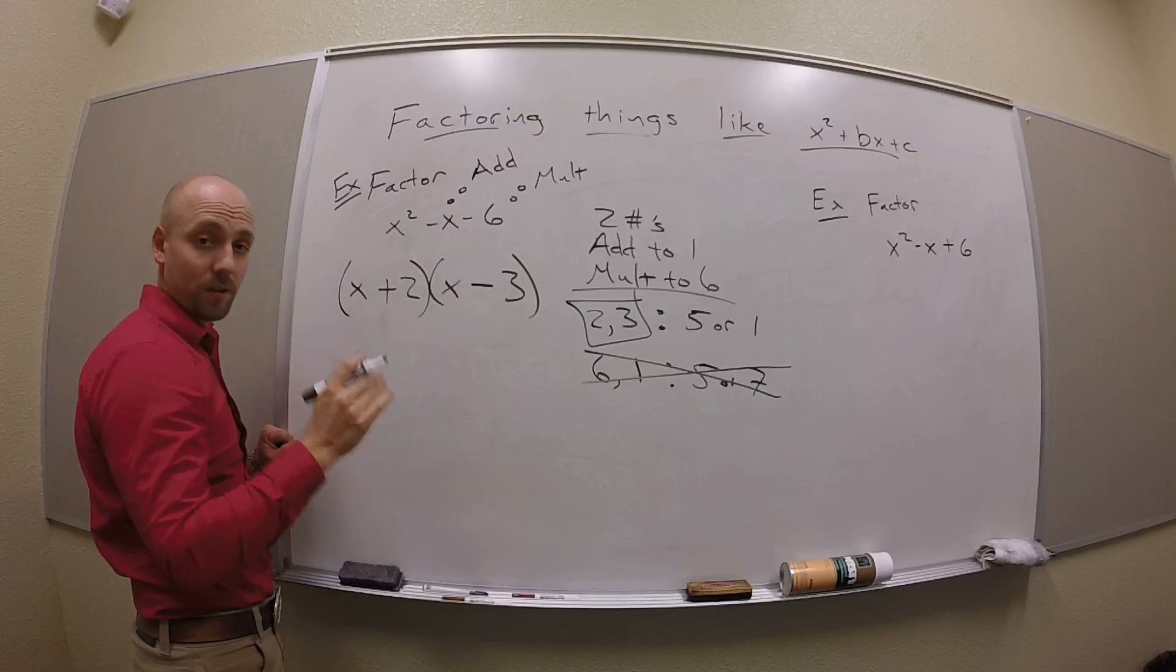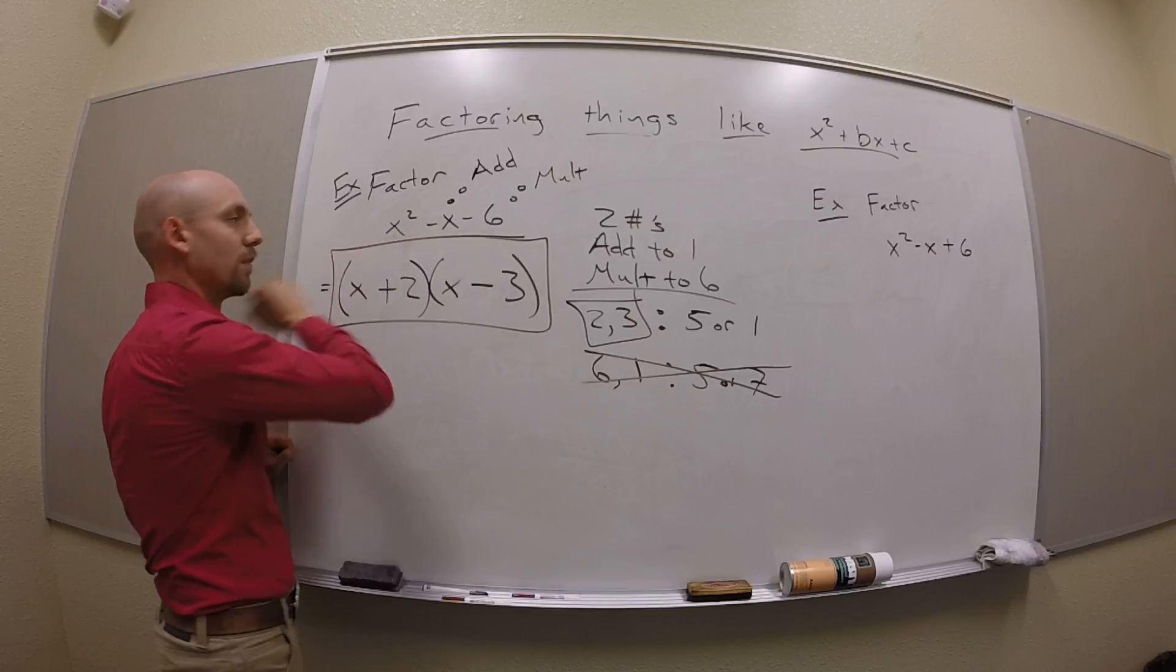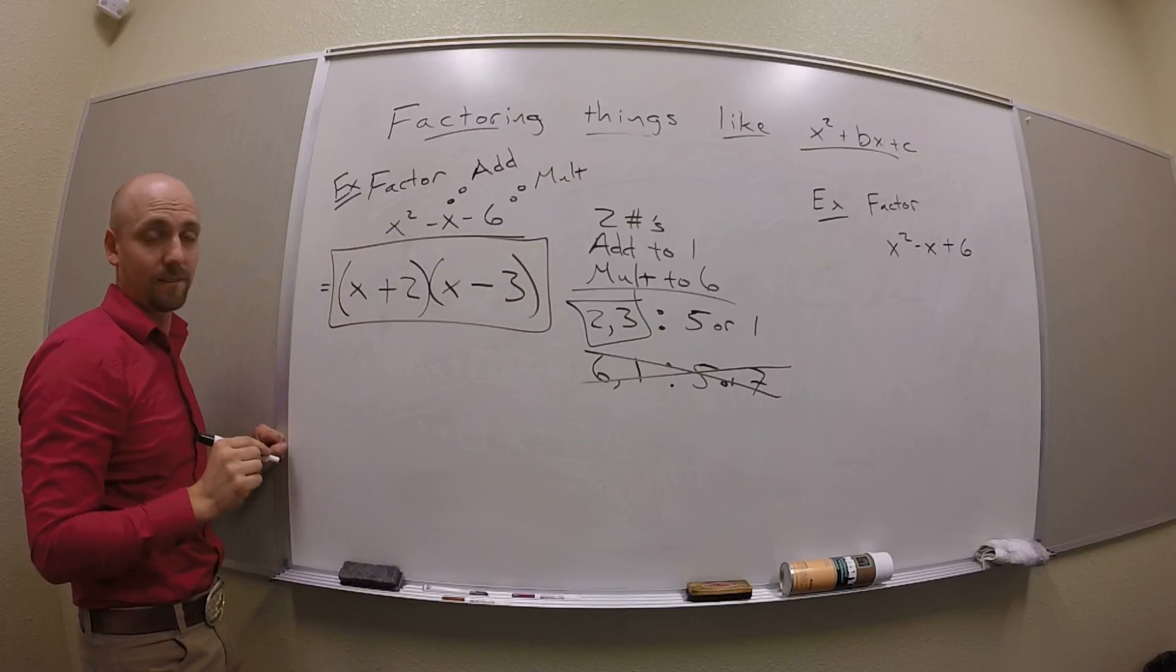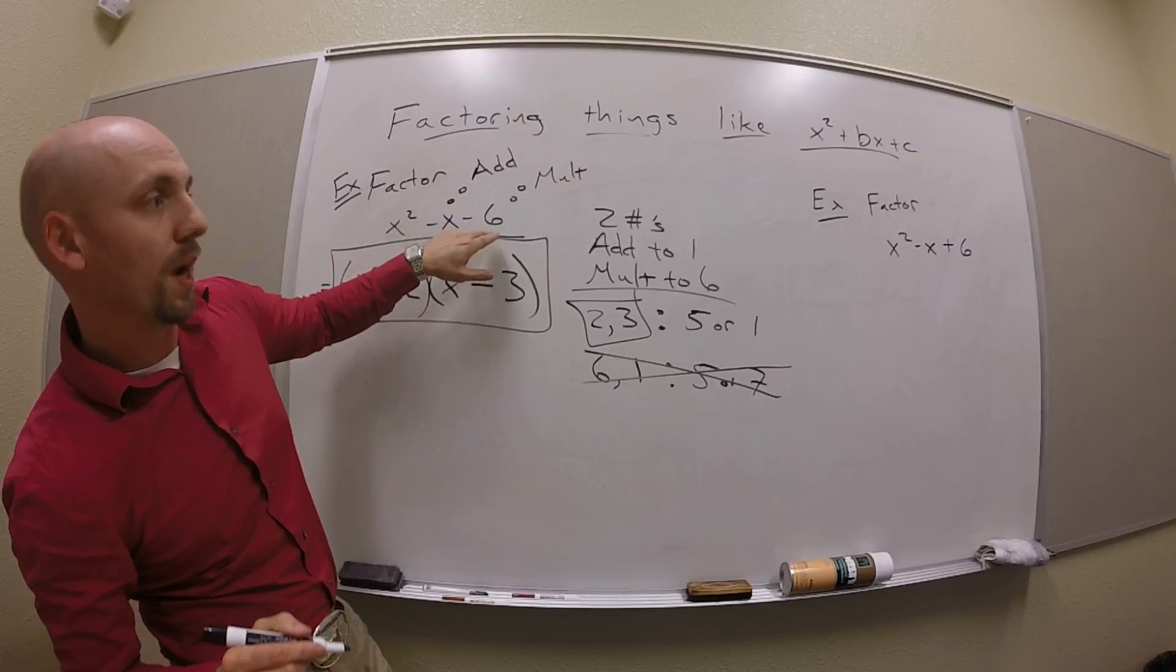Then you could FOIL this out to check and see if you got it right, but we did. So boom, we factored that thing. So this was x squared minus x minus 6.